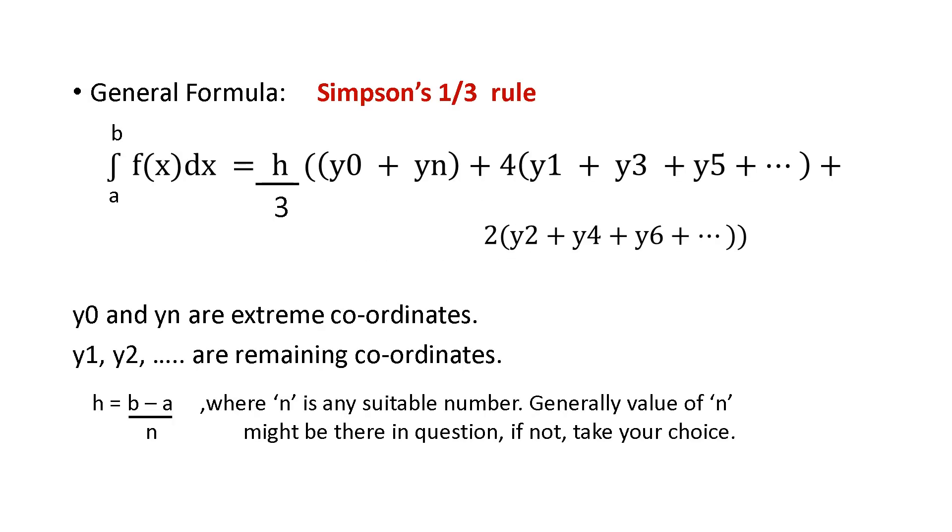This is a general formula for Simpson's 1 by 3 rule. Integration of a to b f of x dx is equal to h by 3 into y0 plus yn plus 4 into y1 plus y3 plus y5 plus etc plus 2 into y2 plus y4 plus y6. There is a multiple of 2.